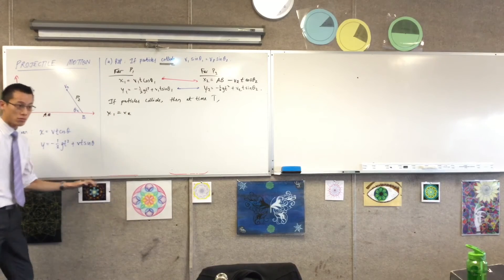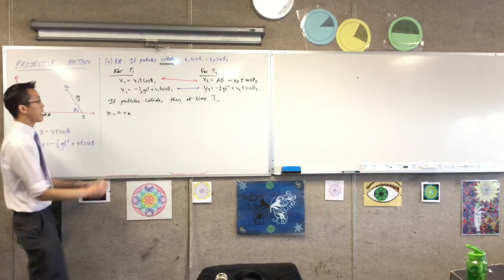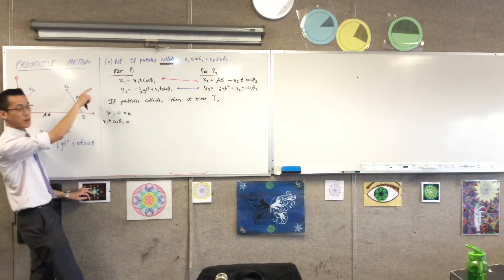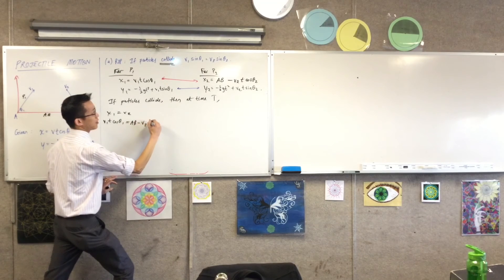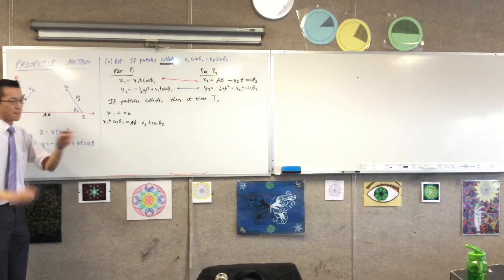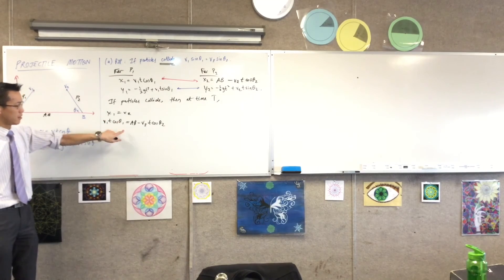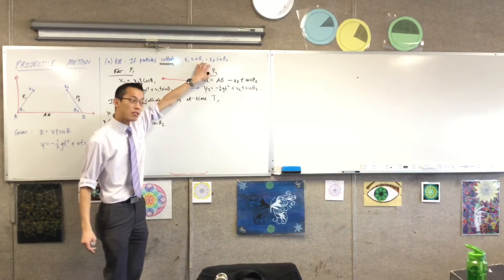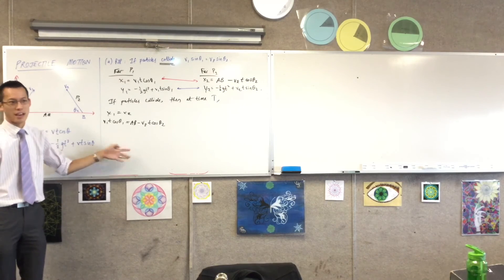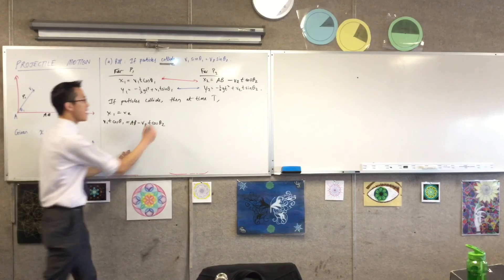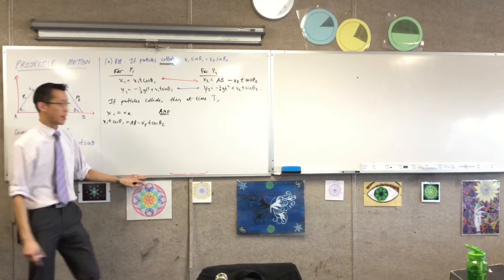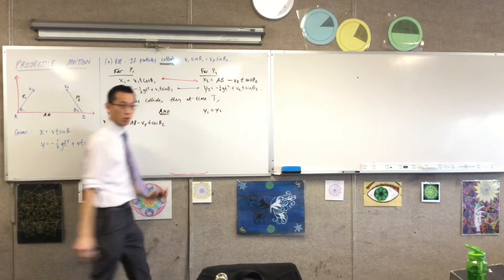X1 equals X2, horizontally I'm in the same spot. So let me write this out, I'm going to get V1T cos theta1 equals, that's X1, equals AB take away, so here comes X2. Okay, so this must be true. But I know two things, number one, this is probably not going to get me the result I'm after. Secondly, I don't know what AB is. Do you notice that? So there's not much I can do to simplify this guy, it's kind of stuck. But then I say,